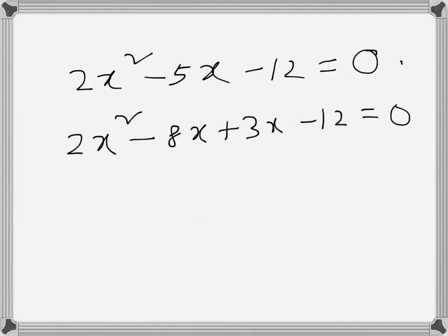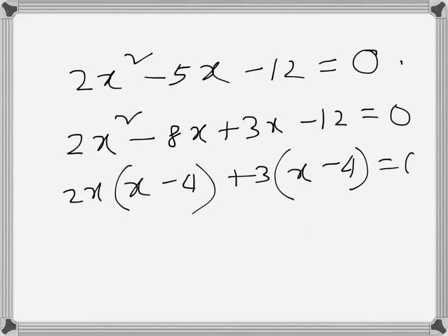4 equals 0. So 2x times x minus 4 plus 3 times x minus 4 again. So if we factorize it, it becomes like this.